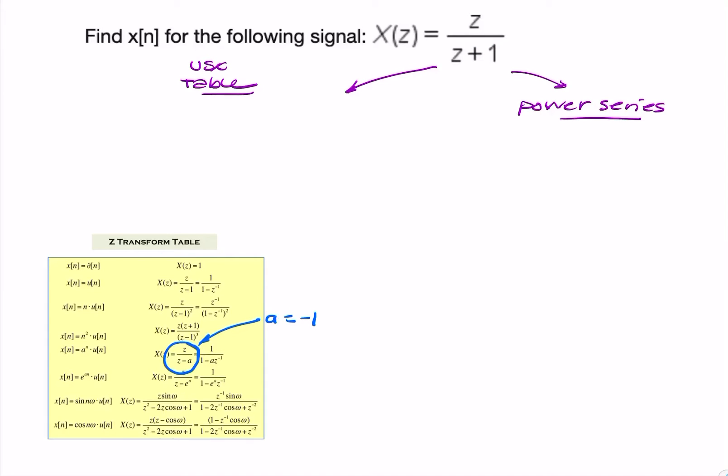So we simply take the inverse z-transform from the table. So it's a to the power n u of n. So we can say x to the power n, that's what we're being asked for, is equal to minus 1 to the power n u of n. And that's the final answer, unless you want to write it out as a sequence.